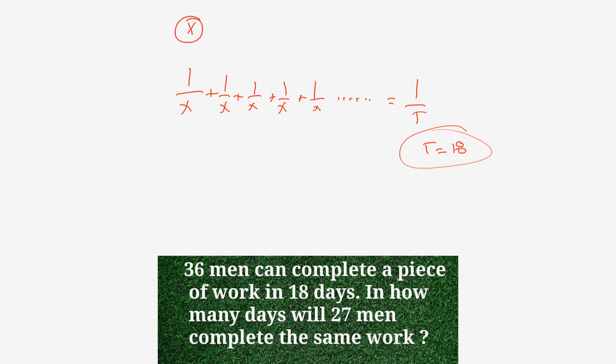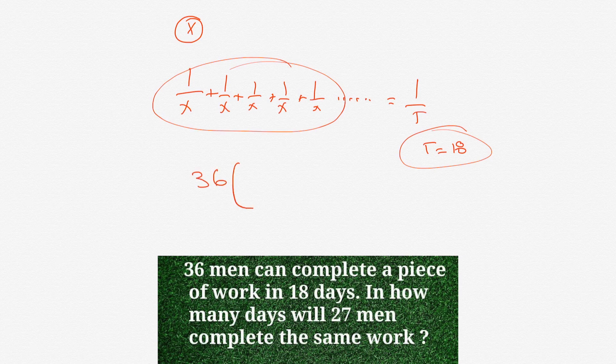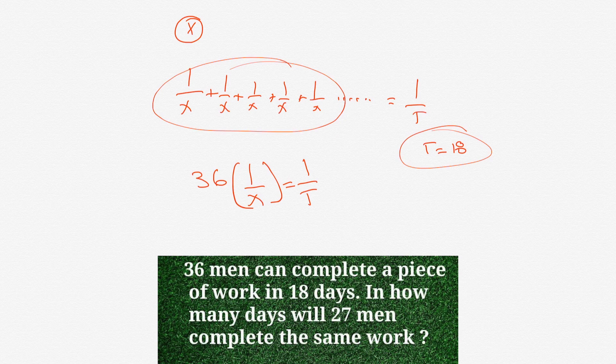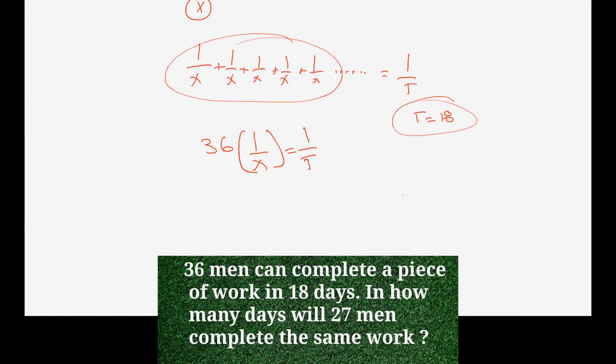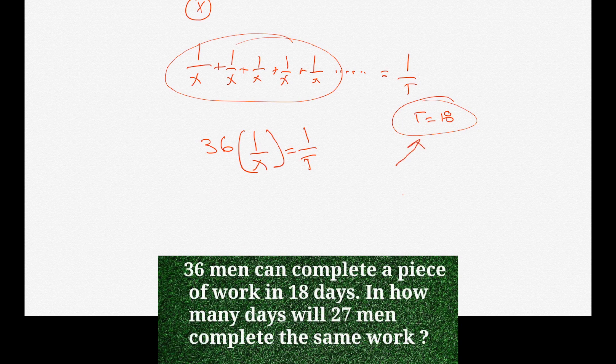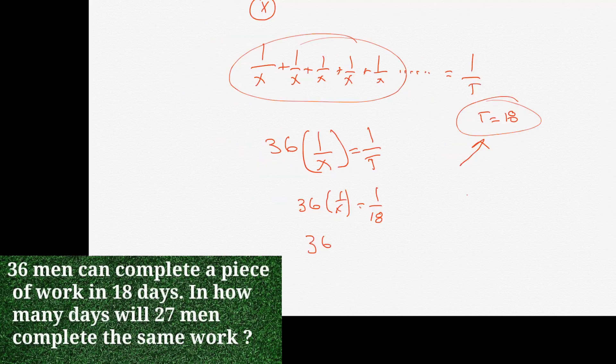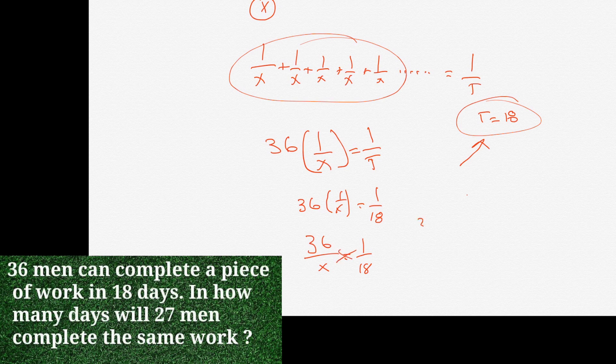Previously, I was saying hours, but it could be days, months, or years. We're going to have 36 of these 1/x's equals 1/t. So, we get 36 times 1/x equals 1/t. And then they told us t is 18 because it takes them 18 days. So, then we get 36 times 1/x equals 1/18. So, that would be 36/x equals 1/18. Then we cross multiply. So, we get 36 times 18 equals x.